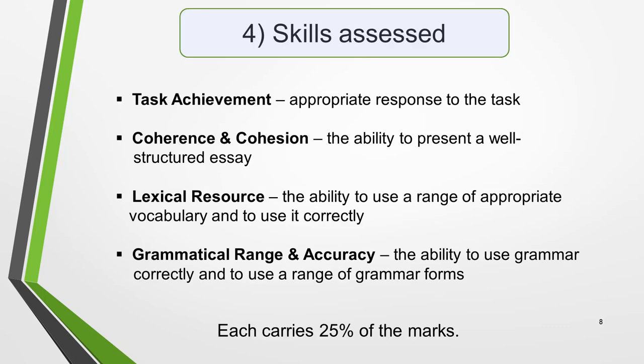It's important to understand how your essay will be assessed. As with all elements of the IELTS exam, the IELTS Academic Writing Test is marked according to four marking criteria. These are: Task Achievement, which is the appropriate response to the task; Coherence and Cohesion, which is the ability to present a well-structured essay; Lexical Resource, which is the ability to use appropriate vocabulary correctly; and Grammatical Range and Accuracy, which is the ability to use grammar correctly and use a range of grammar forms. Each carries 25% of the marks.